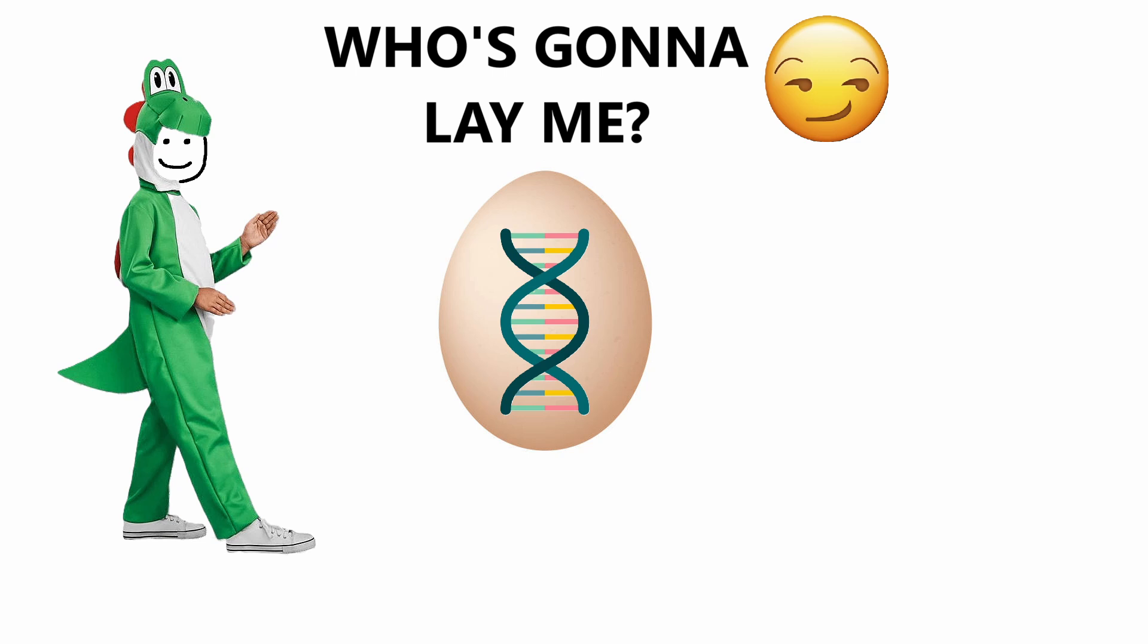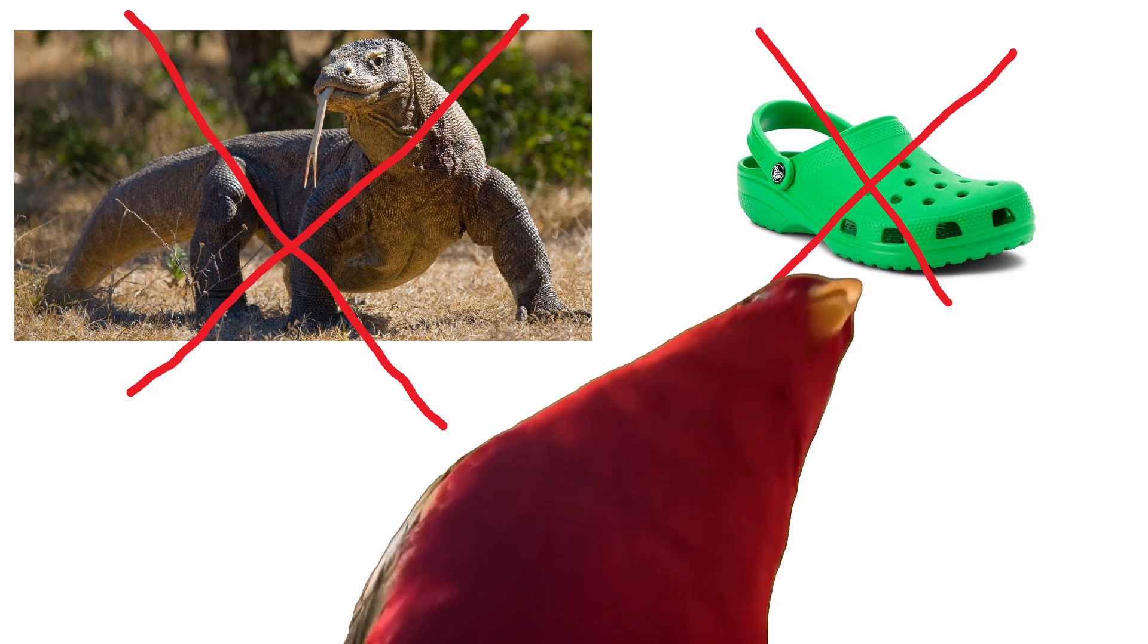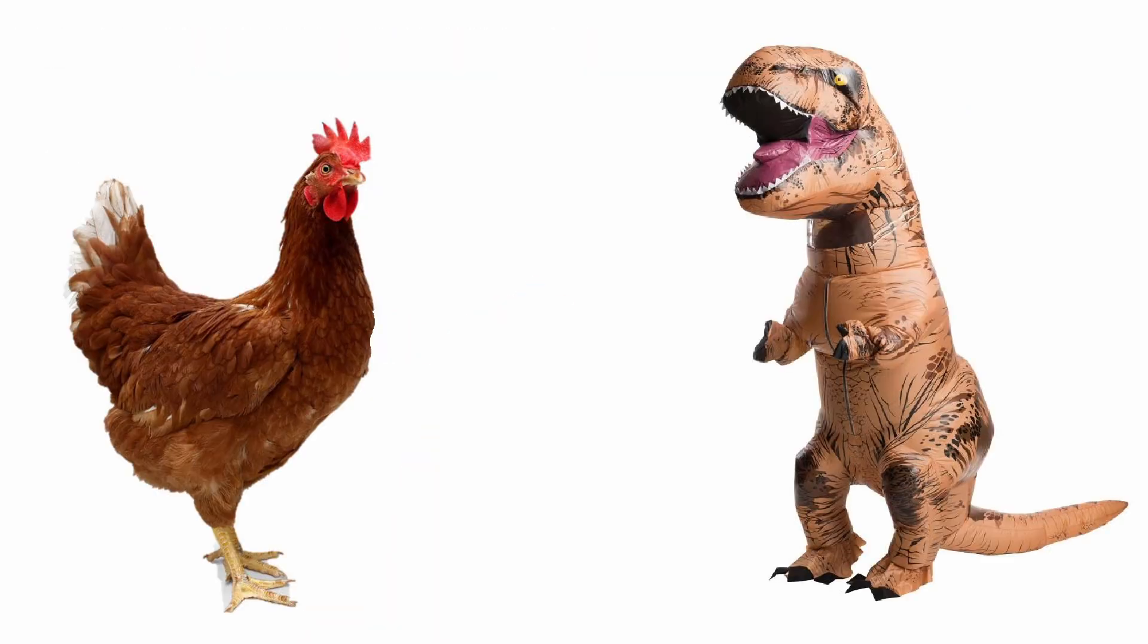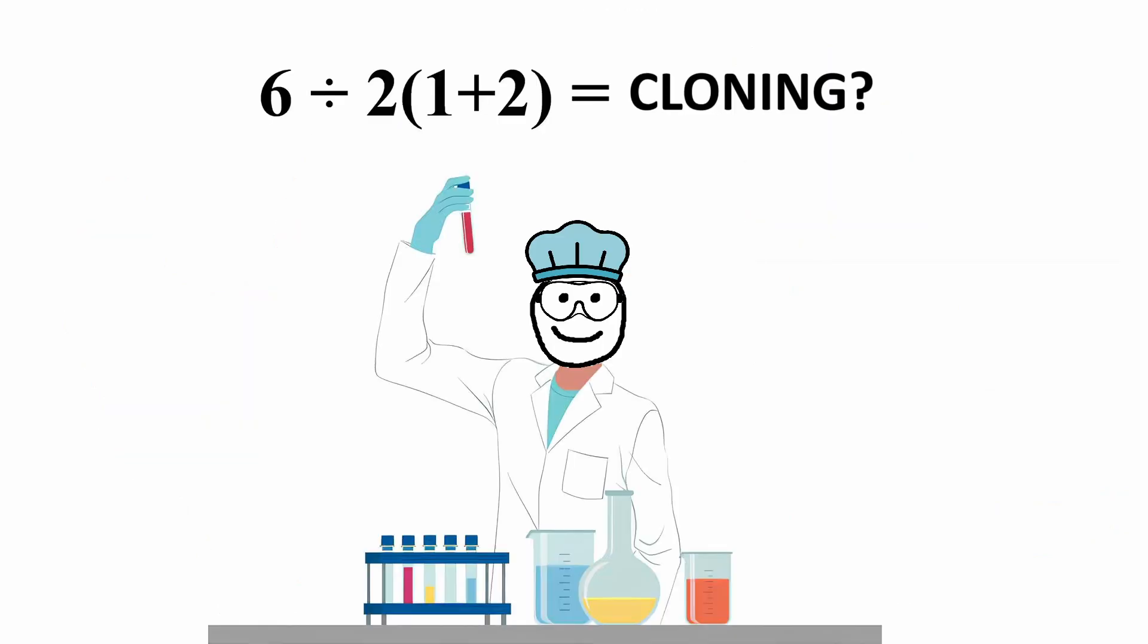The next step of cloning requires a host for the egg, which would be the dinosaur's nearest living relative. Birds are the closest living relatives to the dinosaurs, but their genetic compatibility would probably not be sufficient.